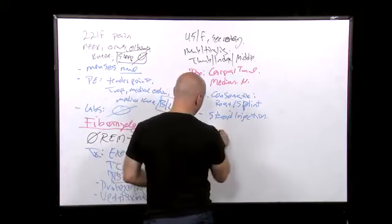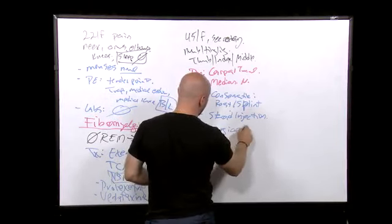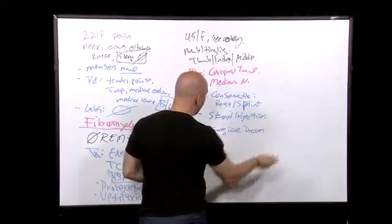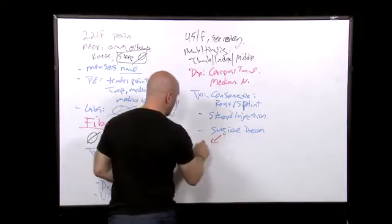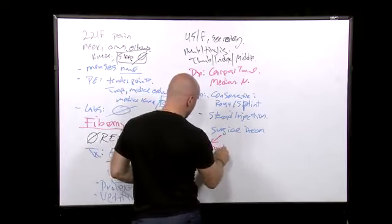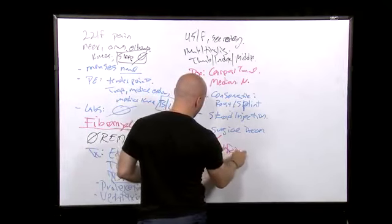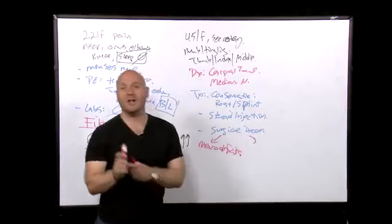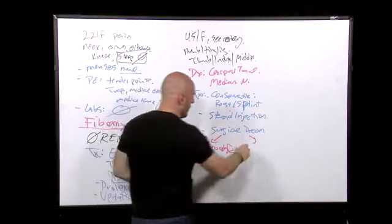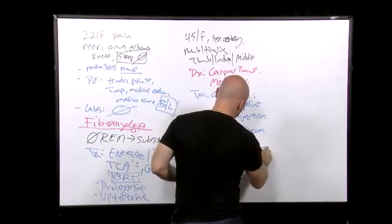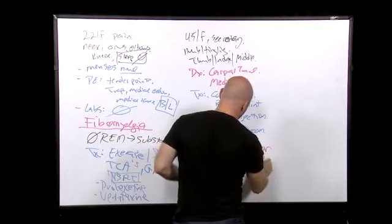Then of course worst case scenario if it's really bad it's not improving what do you do? You do surgical decompression but you're not gonna operate on everybody. What are the indications of surgical decompression? Basically if you have severe neurologic deficits and there's another indication and remember it is called thenar atrophy. This is your thenar eminence, that's the thenar eminence. Thenar atrophy.